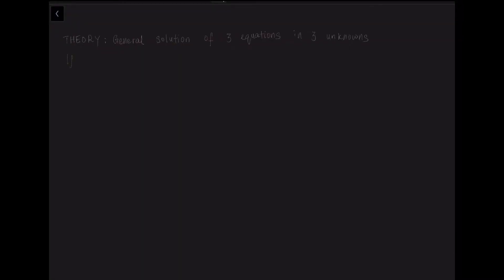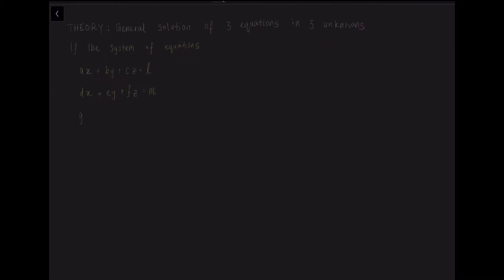Let's now look at how to find the general solutions of three equations in three unknowns. We have a system of three equations: Ax plus By plus Cz equals L, Dx plus Ey plus Fz equals M, and Gx plus Hy plus Jz equals N. We rewrite them in matrix form as Ax equals B.